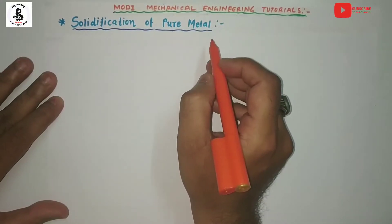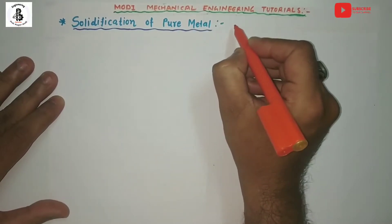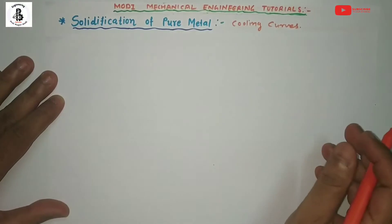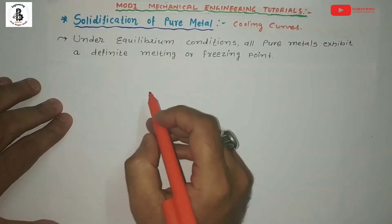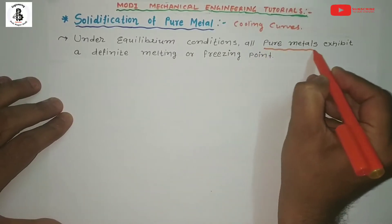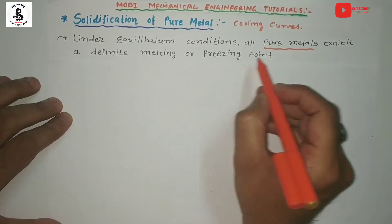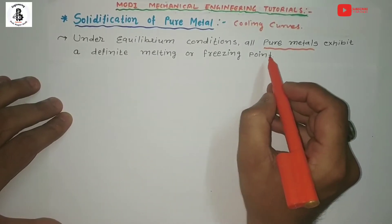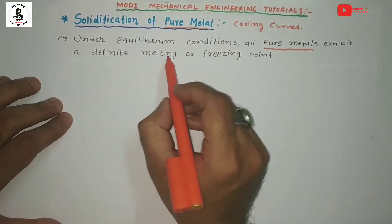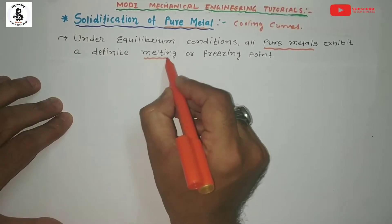Solidification of pure metal will be consisting with a cooling curve. Under the equilibrium conditions, all the pure metals exhibit a definite melting or freezing point. In the case of pure metal, it will be having a single melting point and freezing point — or you can say the same melting point and freezing point.